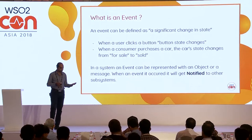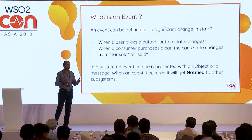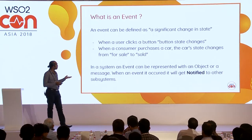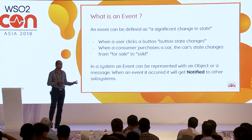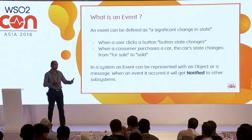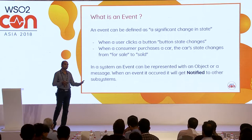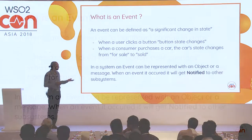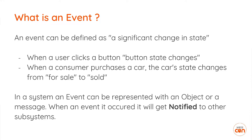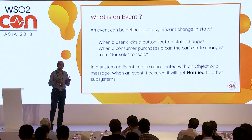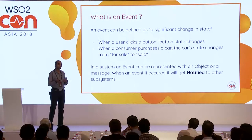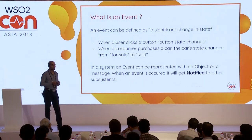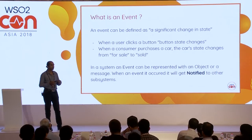Thinking in more abstract terms for bigger systems — let's say it's an auction system — if a customer purchases a car, the state of the car changes inside the system, and that system may recognize that as an event. These events can be represented with an object or message. If it's limited to one application, it will probably be represented with an object. In a distributed system, an event is probably represented by a message which gets passed around.